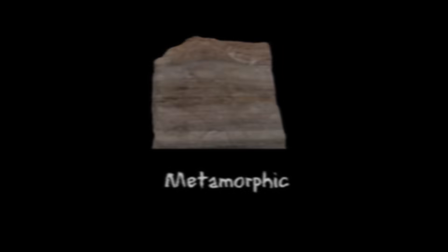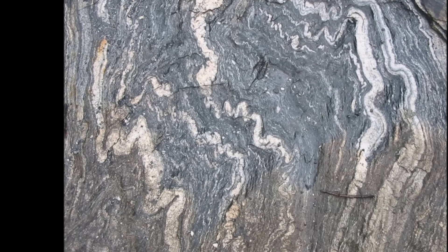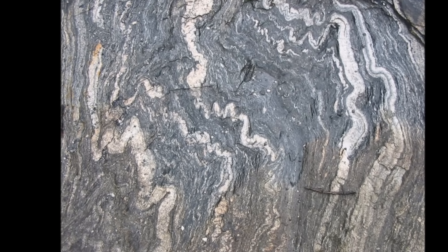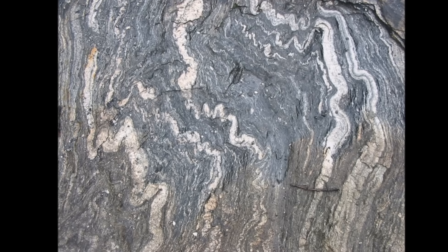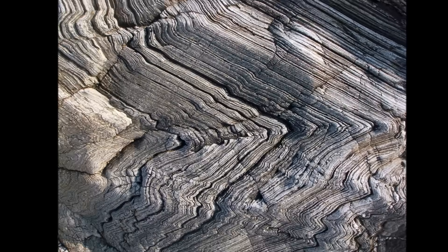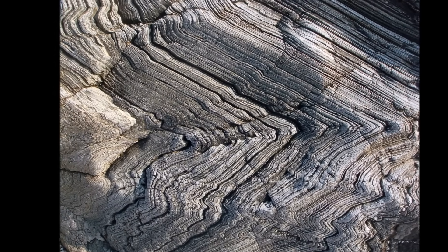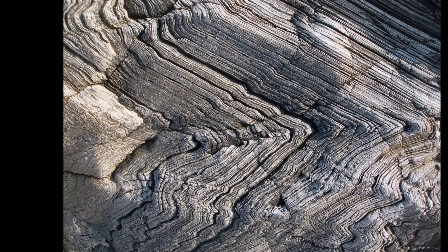The third type of rock is metamorphic rock. The word metamorph means to change form, and metamorphic rock is rock that has been changed by extreme heat and pressure. Sedimentary rock, igneous rock, or even other metamorphic rocks can be changed by heat and pressure into new kinds of rock.